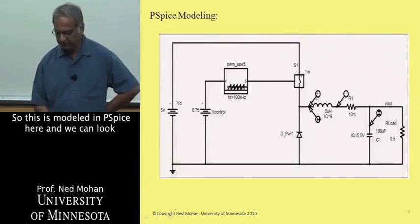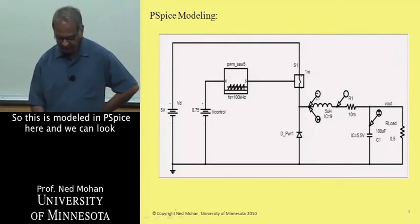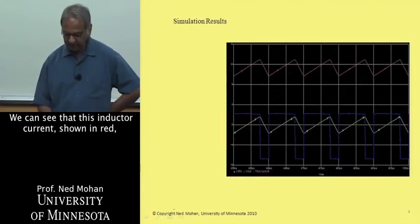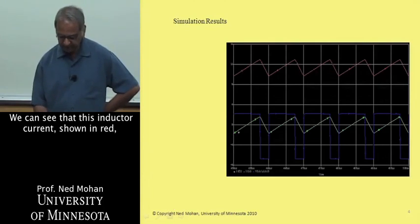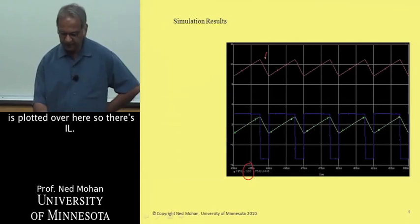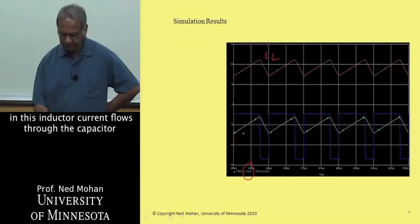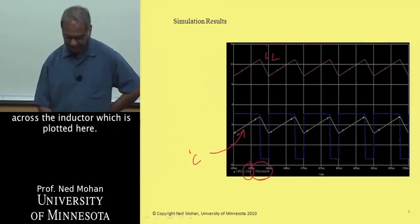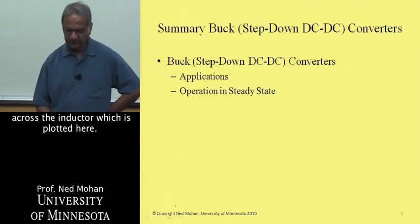So this is modeled in PSPICE here, and we can look at certain things. We can see that this inductor current, shown in red, is plotted over here. So this is IL. It has certain average value. Only the ripple in this inductor current flows through the capacitor. So this is I sub C, and in purple is the voltage across the inductor, which is plotted here.